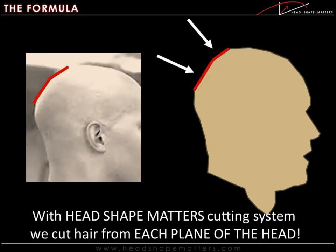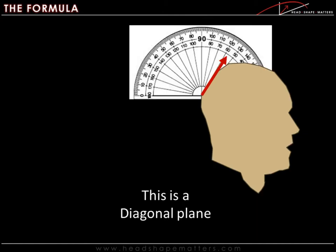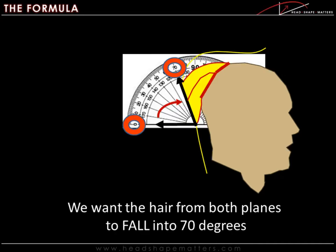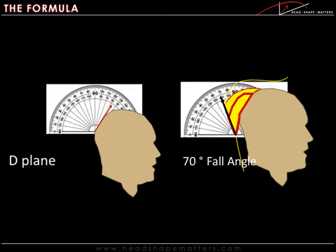With head shape matters cutting system, we cut hair from each plane of the head. This is a diagonal plane. This is a diagonal horizontal plane. We want the hair from both planes to fall into 70 degrees. We'll start with the diagonal.